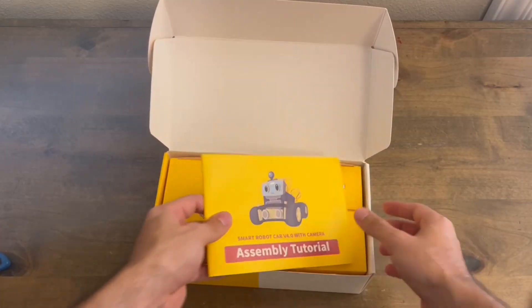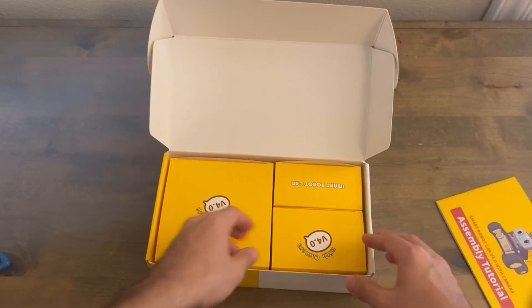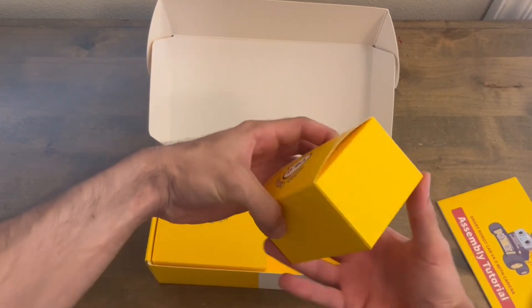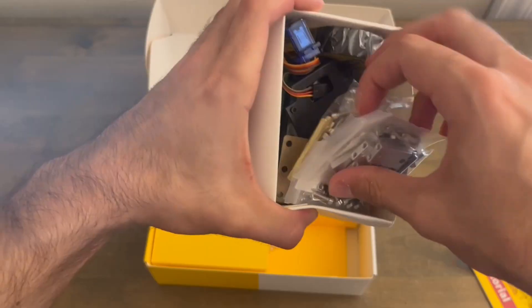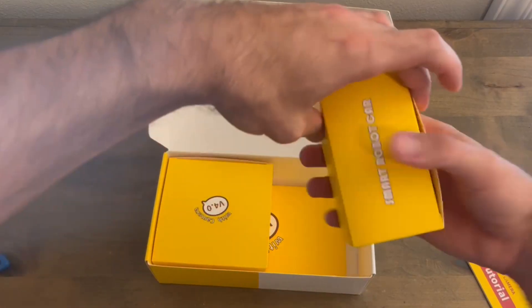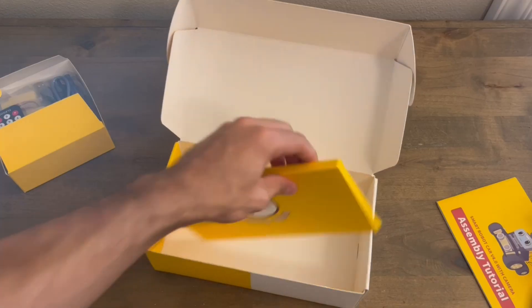If you open the main package, Elegoo has fortunately provided us with a set of assembly instructions, along with modules and their relevant parts being separated into different smaller boxes. The boxes have been labeled with their contents, including a box for the chassis.